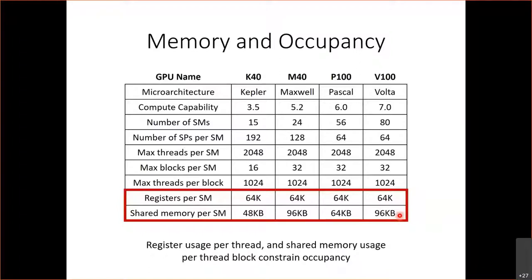A student asked: what happens if we need more shared memory than we have and run the code — does it detect it? There are two ways to request shared memory: static allocation using a compile-time constant array size, or dynamic allocation by configuring the kernel. If you statically allocate more shared memory than the SM has, the code will fail to compile. If you dynamically try to allocate more shared memory than the SM has, the kernel will fail to launch.